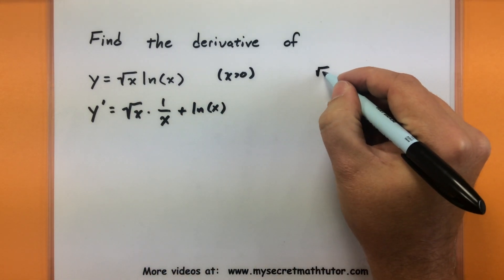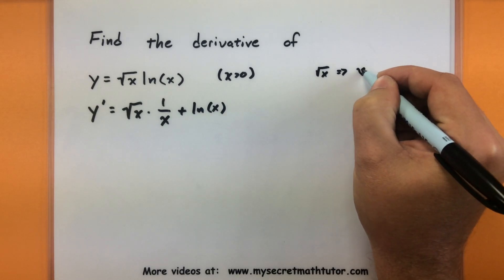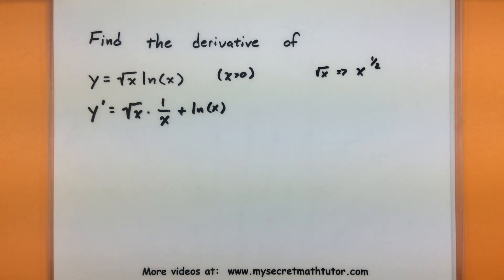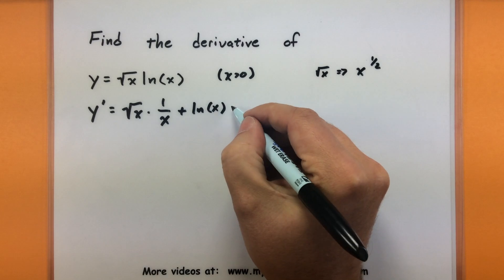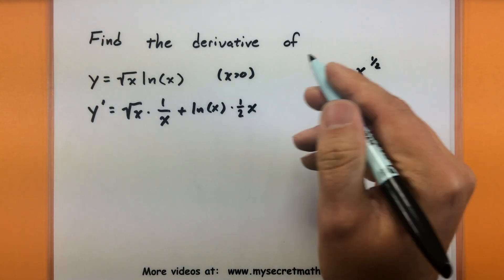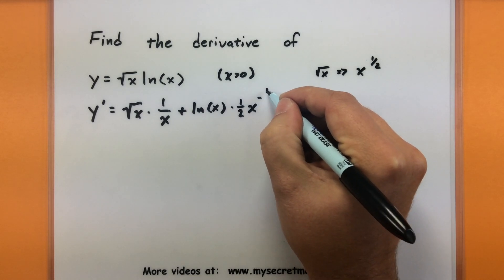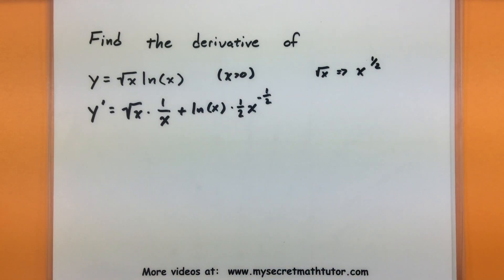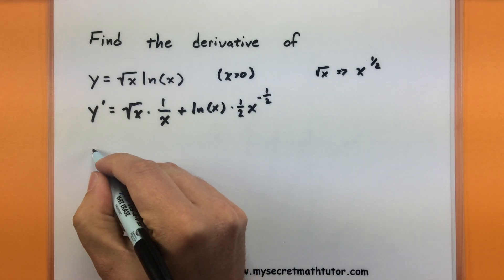Now to take care of the derivative of that square root, you really want to think of this as x to the 1 half, that way you can use your power rule on that. So bring down the 1 half, reduce its power by 1, that'll turn it into a negative 1 half, and now we have its derivative, and it really just needs a little bit of cleaning up to make it look a bit better.